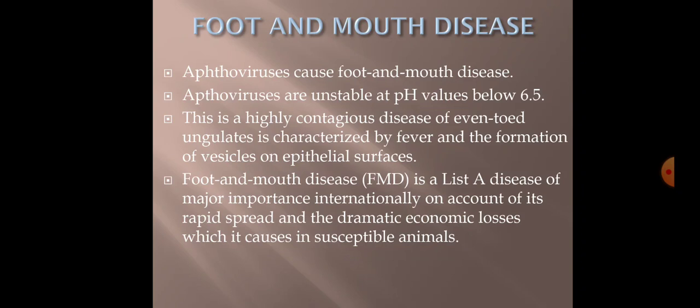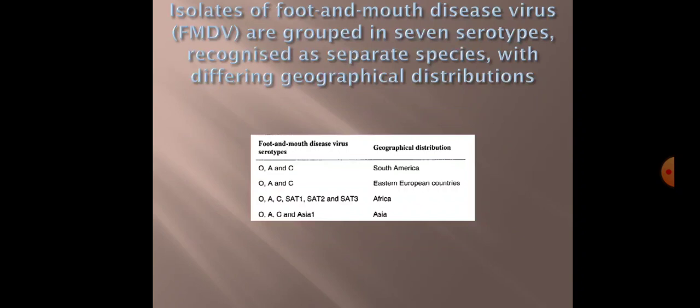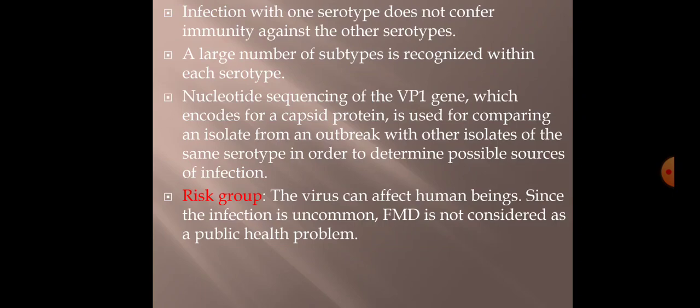FMD is a List A disease of major economic importance internationally. There are seven serotypes of FMD virus: O, A, C, Asia 1, SAT 1, SAT 2, and SAT 3. Out of all these, the mostly prevalent are O, A, and C. The virus is also zoonotic in nature — it can affect human beings, but infection is uncommon, so FMD is not considered a public health problem.